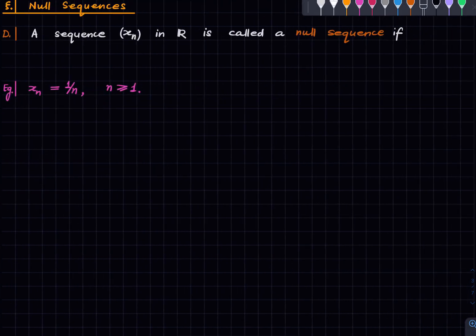So what is a null sequence? This is the very central concept of this lecture, and it's going to be a very short lecture. A sequence xn in R is said to be a null sequence if it converges to zero. It's first of all a convergent sequence, and its limit is zero. That is what a null sequence is. Here is an example: if you define xn as 1 by n for each natural number n, then this turns out to be a null sequence. We saw the proof of this in the previous lecture.